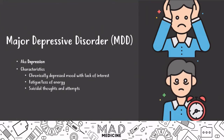Patients also end up having suicidal thoughts, and some of them attempt suicide because the depression can be so severe. Another important feature is that patients have a change in appetite, which causes a change in their weight. As discussed in our previous video, mood disorders are physiologic: the emotion of being depressed affects appetite, which in turn affects weight — and together these can cause a lot of problems in both body and mind.